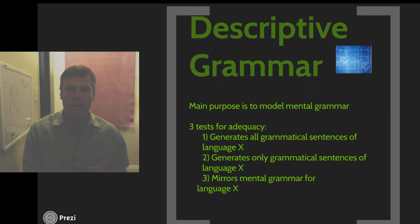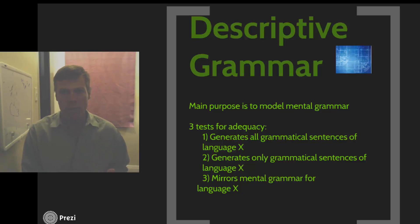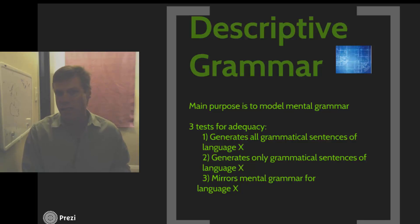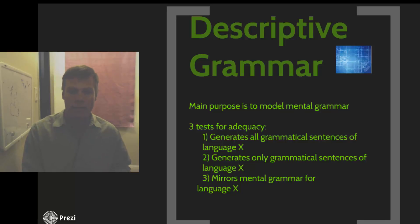So there are three tests for adequacy of a descriptive grammar. We want it to generate all of the grammatical sentences of a language, and we want it to generate only the grammatical sentences of the language, and we want it to mirror the mental grammar for that language in how it's modeling it. All three of those are necessary. The third one, in this course, we're not going to have a lot to say because it's the one that brings us to the most theoretical level. If you were to go on and take advanced courses in linguistics, you'd talk a lot about whether it is mirroring the mental grammar or not. We're mostly interested in whether our grammar can adequately generate all of the grammatical sentences of a language and only the grammatical sentences.